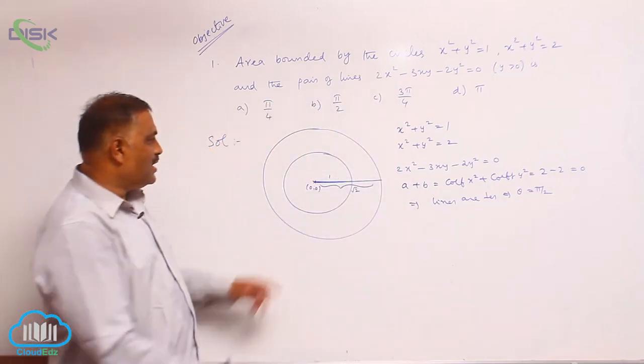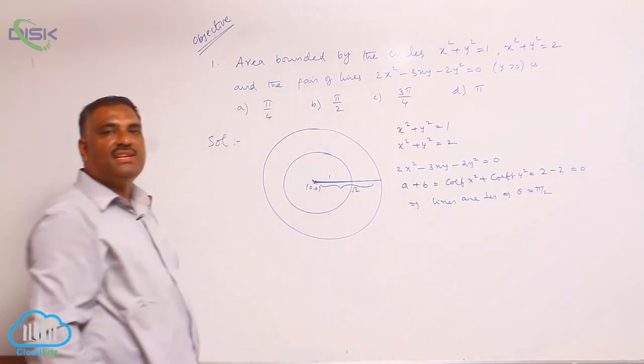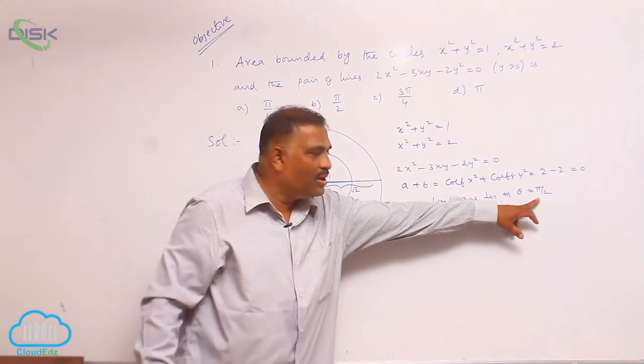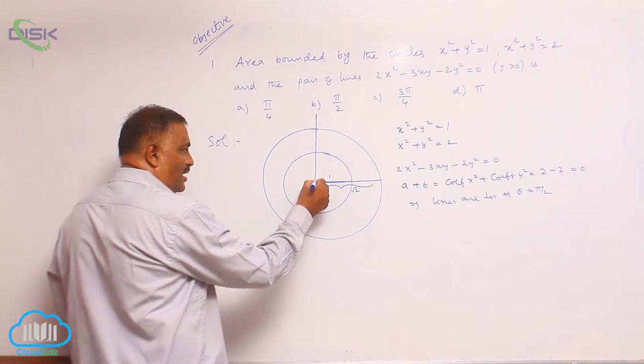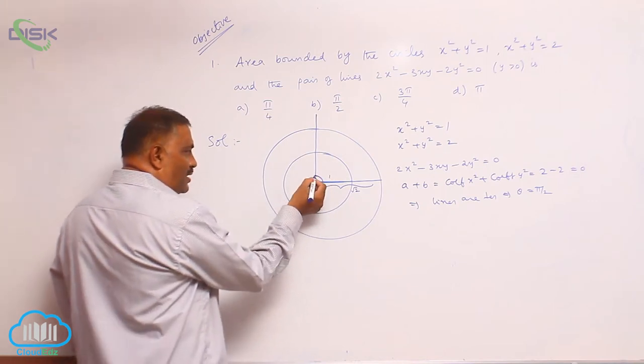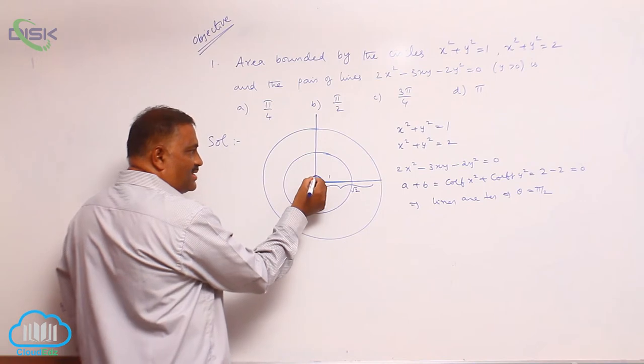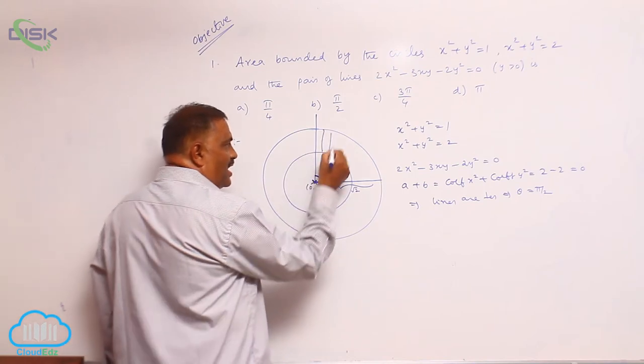You know that at a point the angle is given by 360, but we require only 90. That means exactly one fourth only we require. So this is called 90, again at 360 means this is 90. This is the area we require.